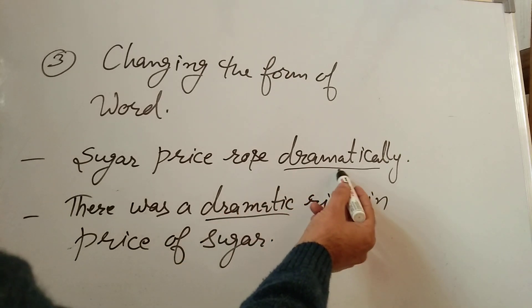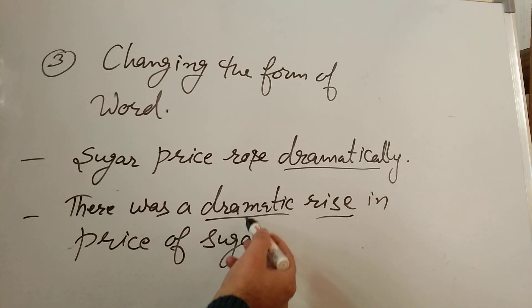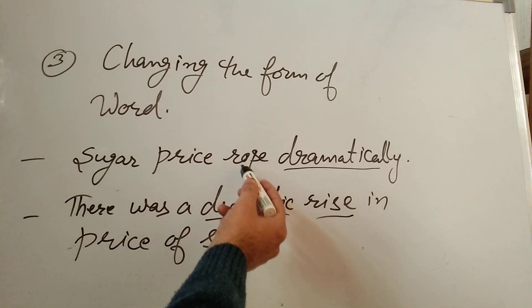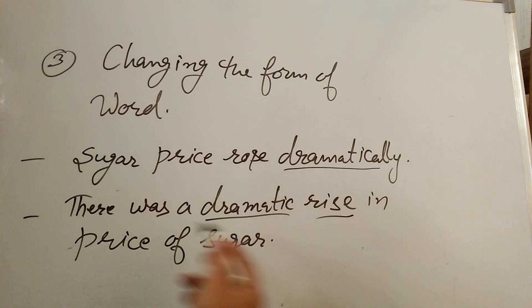Dramatically earlier was adverb changed into adjective and rose verb into noun. So, there was a dramatic rise in prices of sugar. In this way, this can be done.